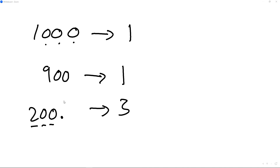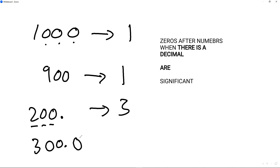The number after the decimal point — if it's zero, then it's not significant on its own. But if you've got a number like 300.0, the zero after the decimal makes everything significant, which means this is four significant figures. The only time a zero is not significant is when you have zeros on the left-hand side of the decimal, between the decimal and the non-zero numbers.